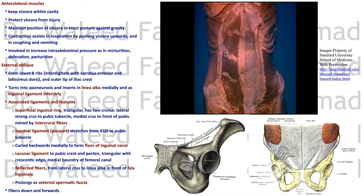The muscle does not go all the way as fleshy fibers; it turns into an aponeurosis that passes anterior to the rectus abdominis and inserts into the linea alba. Lower down, the lower fibers attach to the iliac crest then jump to the pubic crest, and in between the aponeurosis thickens to form the inguinal ligament, attached from the anterior superior iliac spine to the pubic crest. The inguinal ligament is not just a thickening — it goes backwards as an L-shaped ligament providing the floor of the inguinal canal.